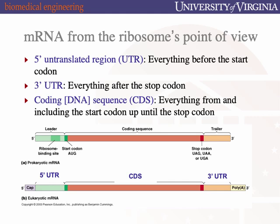5' UTRs are thought to regulate translational efficiency — the kinetics and ease with which translation initiation occurs depends on the sequence and structural characteristics of the 5' UTR. 3' UTRs are often the site of post-transcriptional regulation — how long RNAs stay around in the cell, and there are post-transcriptional regulatory processes that recognize sequences in the 3' UTR and destabilize or stabilize those mRNAs. So the reasonable association is: 5' UTRs are more towards translation, and 3' UTRs are more towards post-transcriptional regulation.